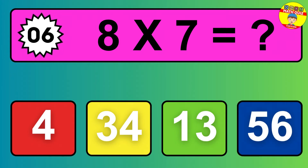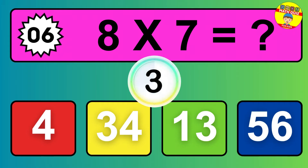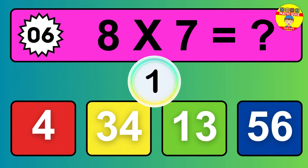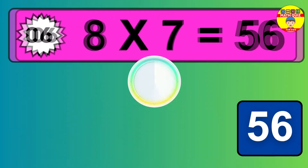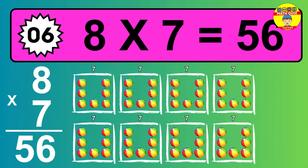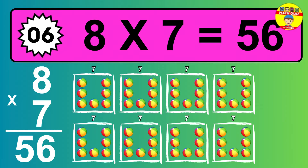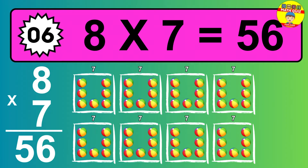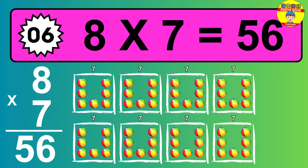Question 6. 8 times 7 equals what? The answer is 8 times 7 is 56. To calculate, we have 8 groups with 7 balls each one. So how many balls do we have? 56 balls.